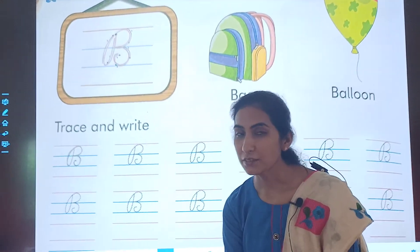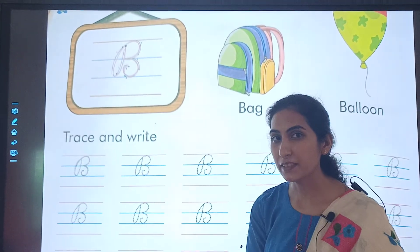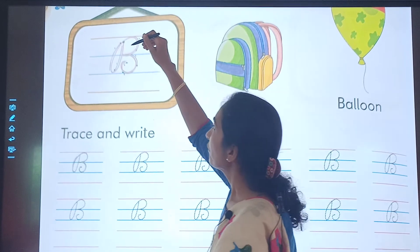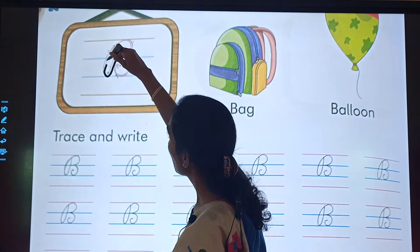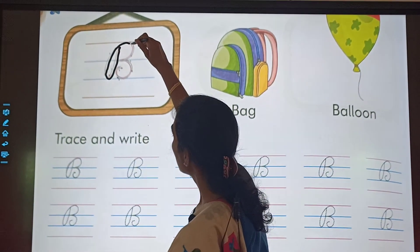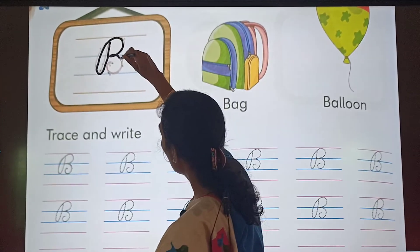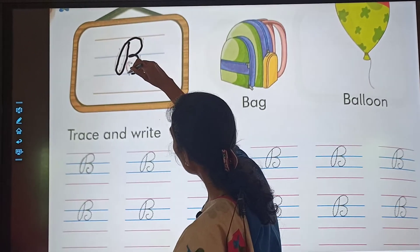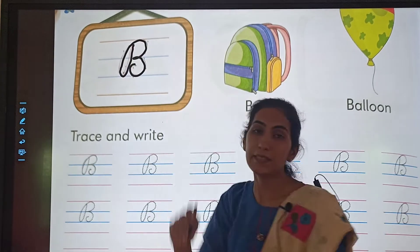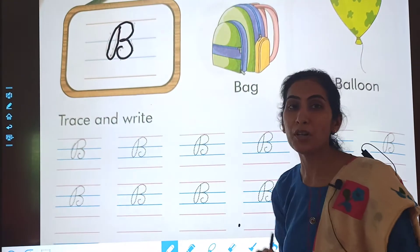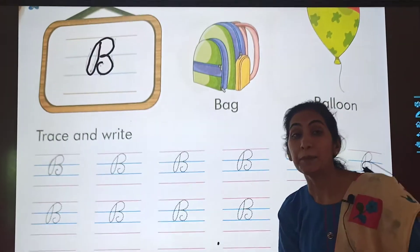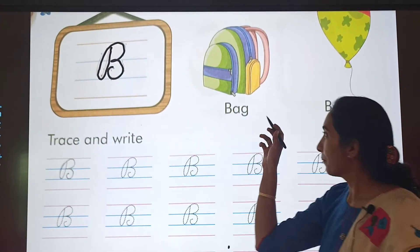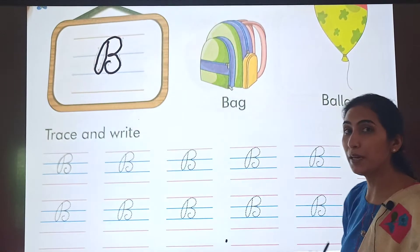So students, when we will start this letter, we will start from this point. Go down, have a curve, go up, then a curve, another curve. This is letter B. B for bag, B for balloon.